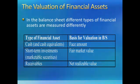For example, what is printed on the face of a $10 bill? It's $10. What is printed on the face of a check for $150? It's $150. All cash and cash equivalents have a face amount, and this is the amount that is used to determine the amount reported on the balance sheet.